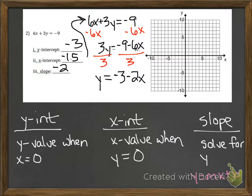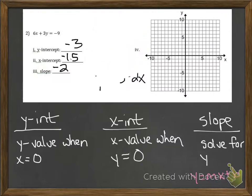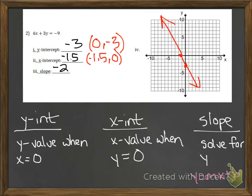Now we can use all that information to graph, and we only need two points in order to sketch a graph of a linear equation. So we can use our y-intercept point on the y-axis, and then our x-intercept, which is a point on the x-axis, and then we can just connect those dots in order to create our graph.